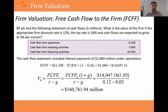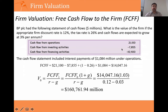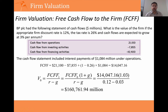Let me give you an example using BP data to value BP with the free cash flow to the firm method. From the accounting statement, in millions of dollars: cash flow from operations is $21 billion. Cash flow from investing activities is negative $7.8 billion — negative because companies tend to buy equipment, plants, land, and in BP's case, oil rigs. Cash flow from financing activities is negative $10.4 billion, meaning BP paid off some debt or bought back some of its equity.